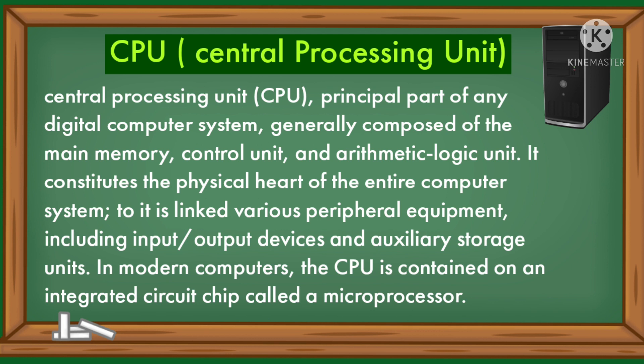Now we will learn about the CPU — central processing unit. The CPU is the principal part of any digital computer system, generally composed of the main memory, control unit, and arithmetic logic unit. It constitutes the physical heart of the entire computer system. Linked to it are various peripheral equipment including input/output devices and auxiliary storage units. In modern computers, the CPU is contained on an integrated circuit chip called a microprocessor.